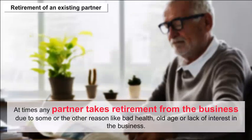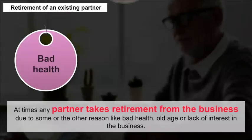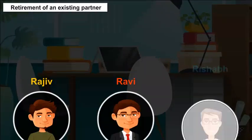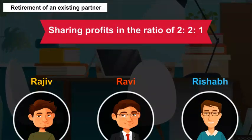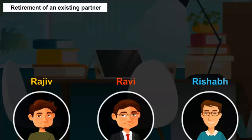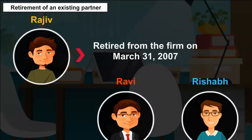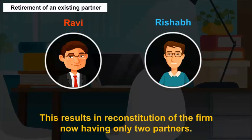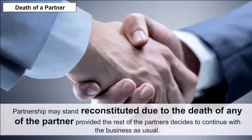Retirement of an existing partner: At times, any partner takes retirement from the business due to reasons like bad health, old age, or lack of interest. For example, Rajiv, Ravi and Rishabh are partners sharing profits in the ratio of 2:2:1. On account of illness, Rajiv retired from the firm on March 31, 2007. This results in reconstitution of the firm, now having only 2 partners.